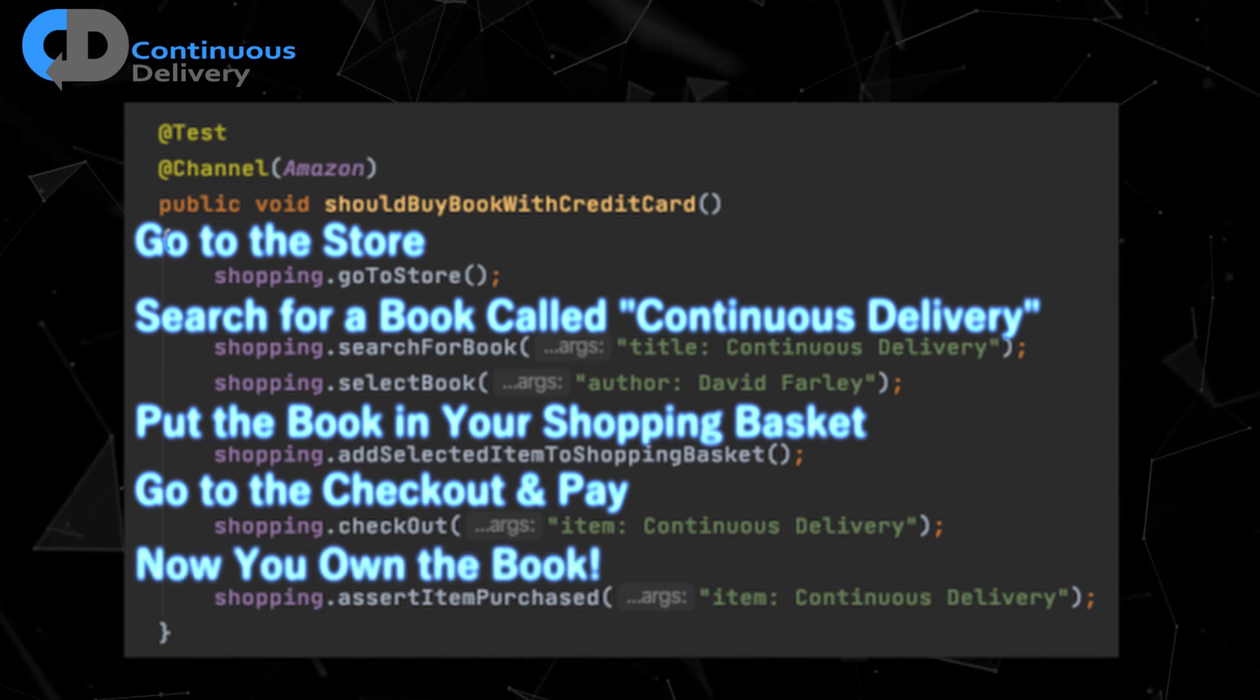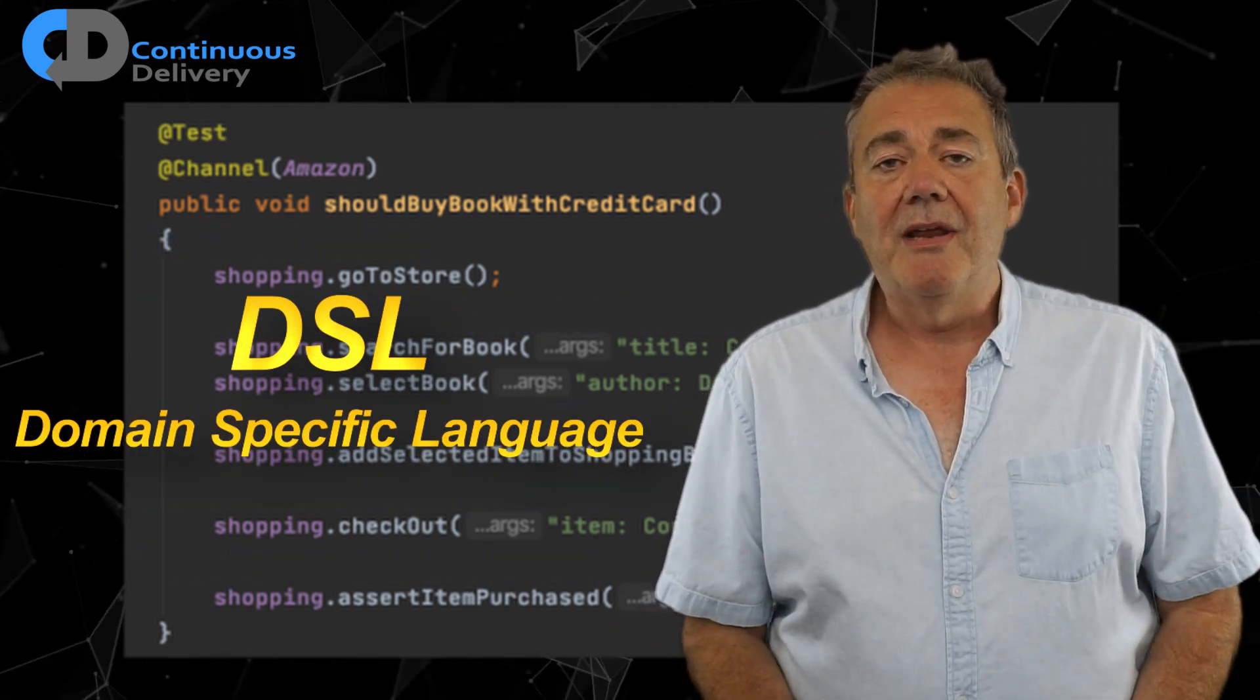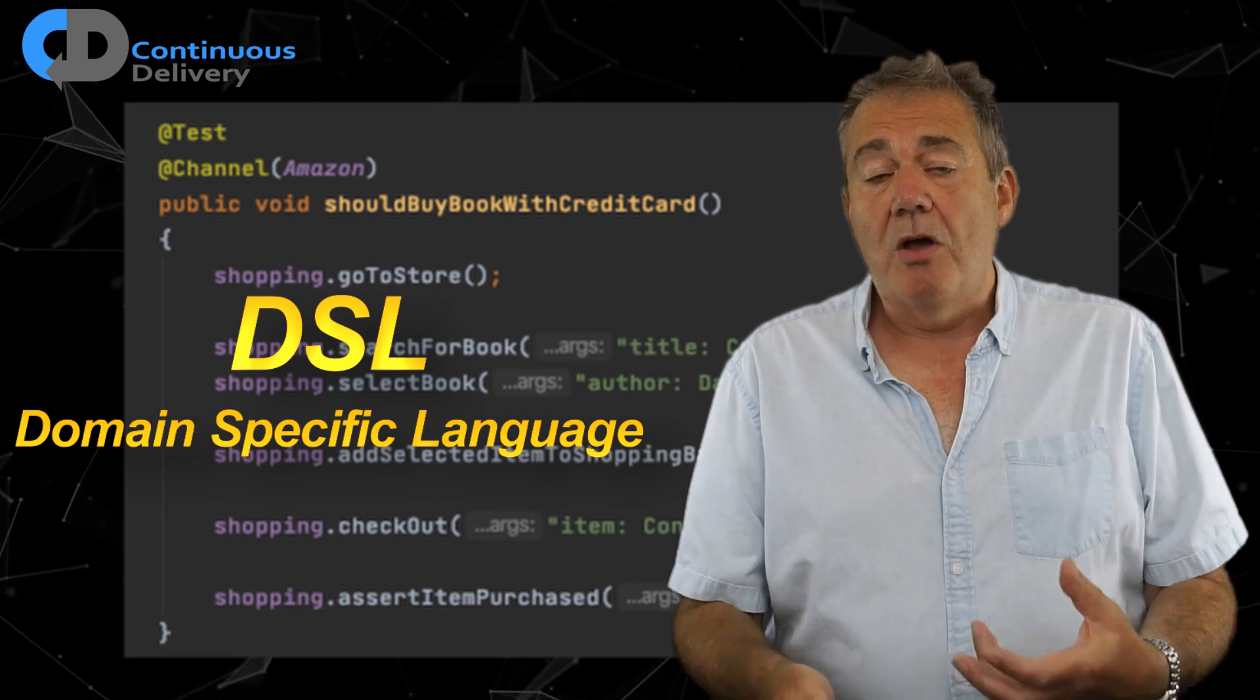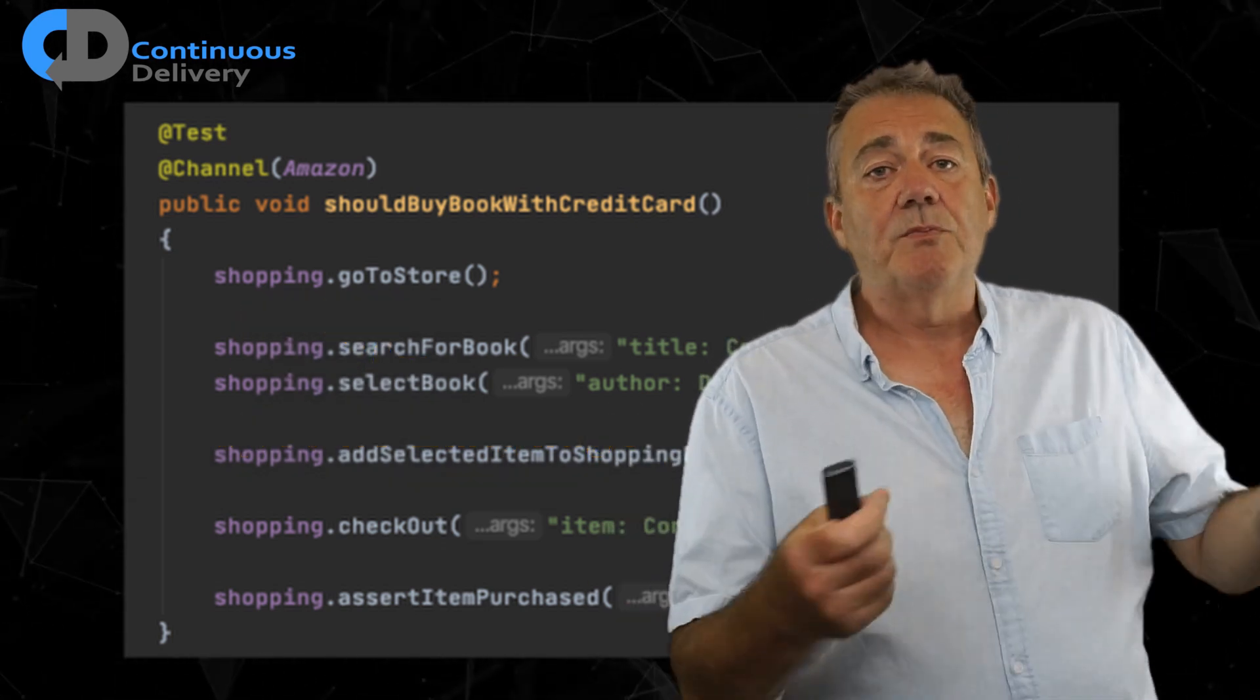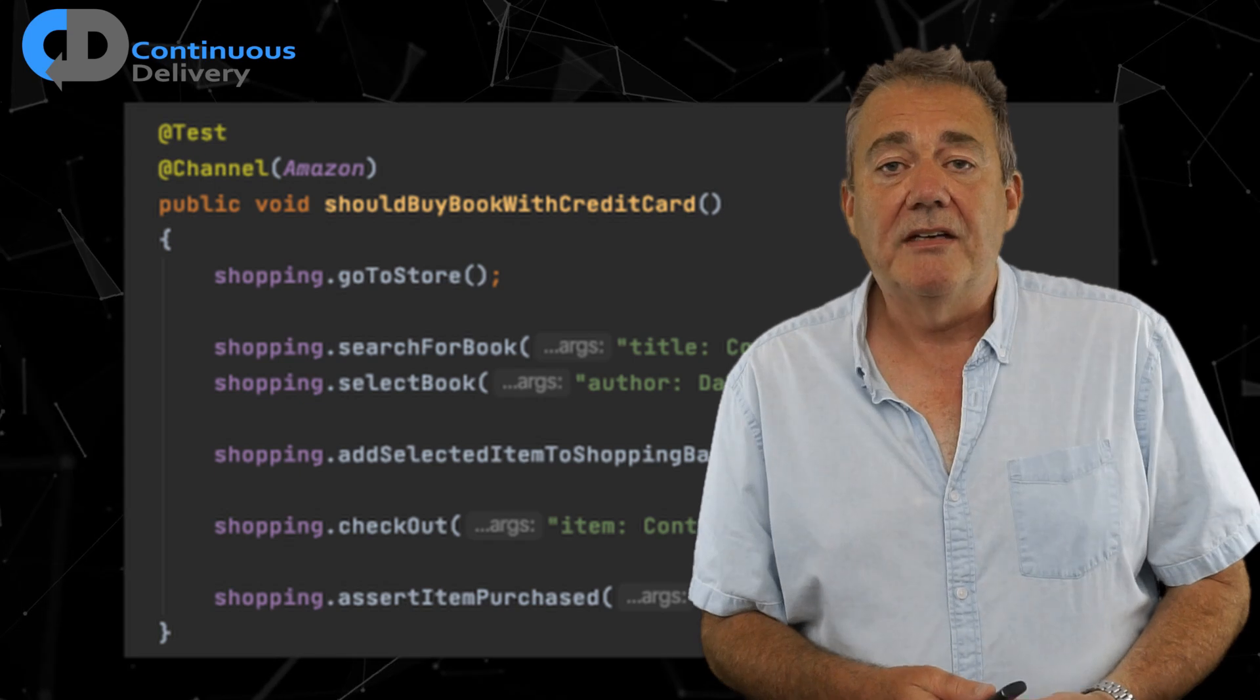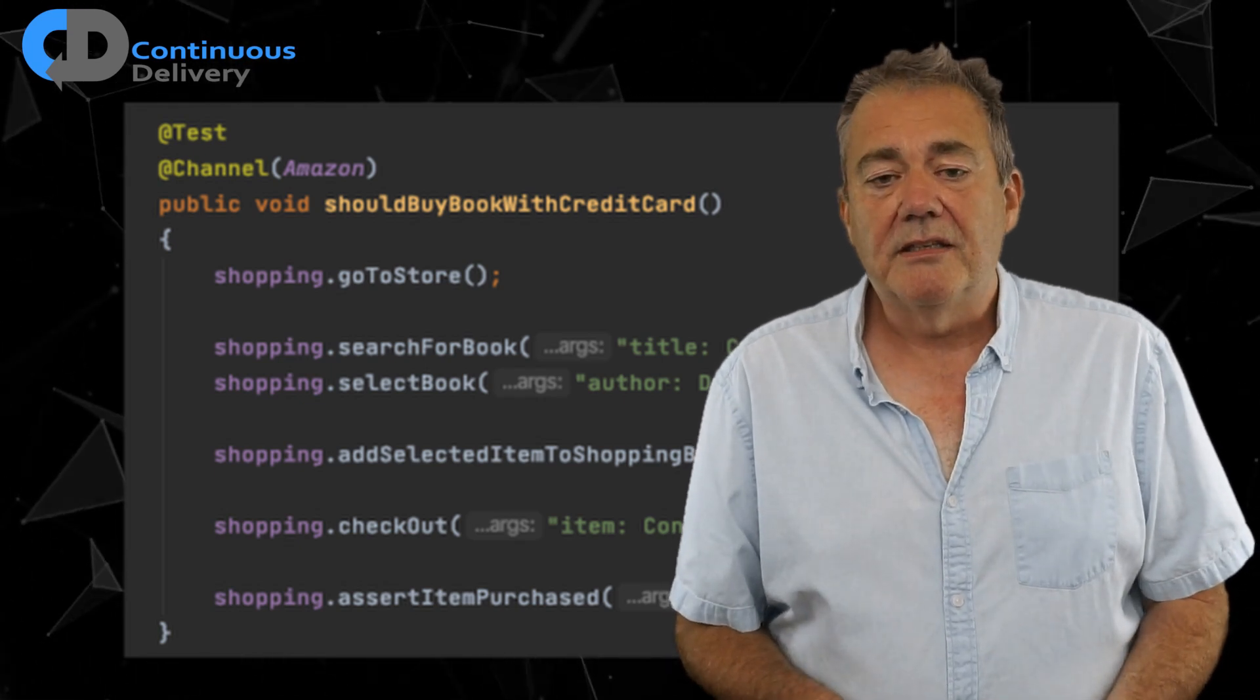Now, my preference in implementing these sorts of tests is to use a thing called an internal DSL. That's a DSL hosted in a regular programming language and then I get to use all of the tools of my programming language. So, in this example, Java. But that doesn't stop you using the same techniques with an external DSL. That's where you have an explicitly different language. Something like the Gherkin language within Cucumber or Specflow is a good example of that. You can apply all of the ideas I'm describing here in those other approaches. But my examples are going to be based on an internal DSL.